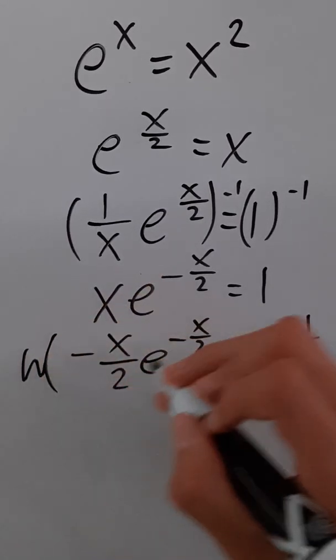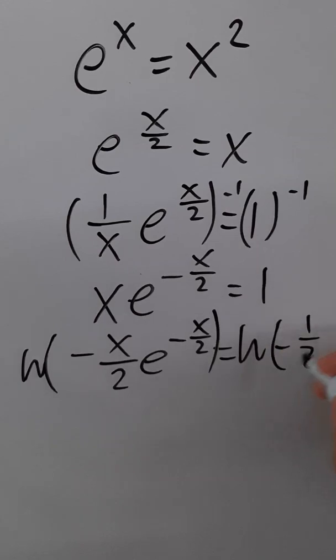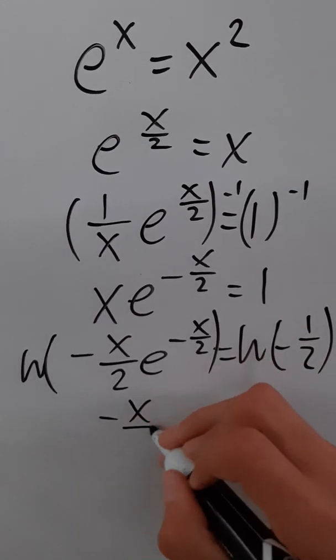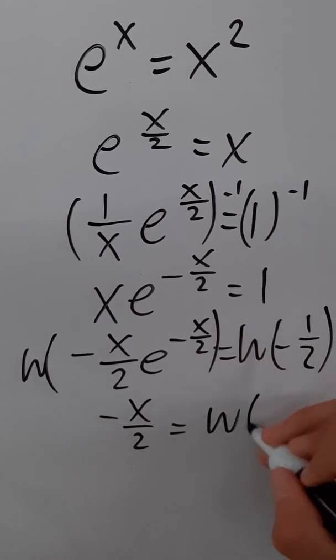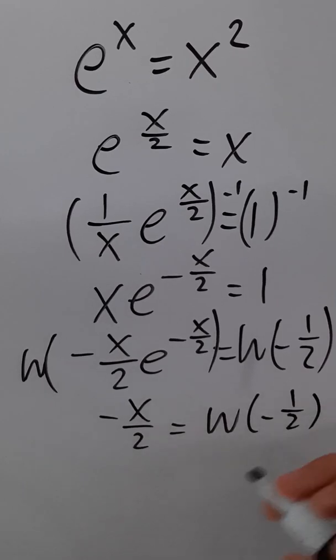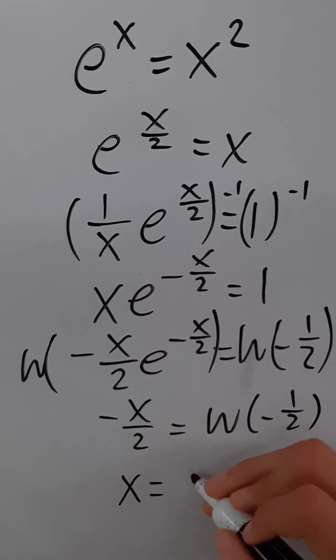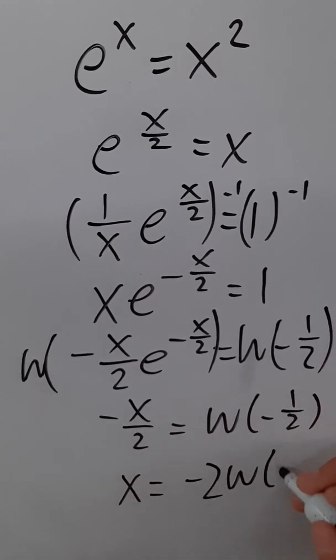So let's take the W of both sides, the product log. We get negative x over two equals W of negative one half. And then if we want to isolate x, we get negative two W of negative one half.